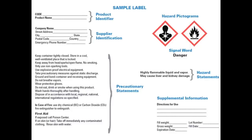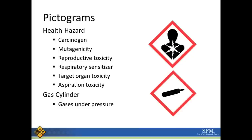As you can see, this is a sample label that will fall under the new GHS standard going forward. Now we'll go through all of the eight new pictograms that may be required on a label. The first one is the health hazard. Each label must be a square with a red border put on a point. The health hazard means it could be a carcinogen, may cause reproductive issues, or may cause respiratory sensitivity or aspiration toxicity. The second pictogram is a gas cylinder, meaning that product is a gas under pressure.